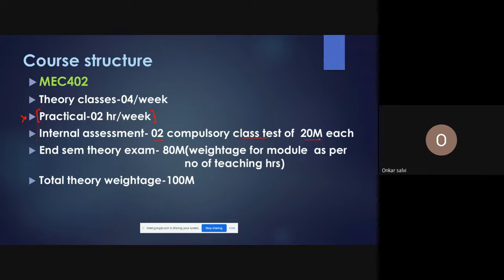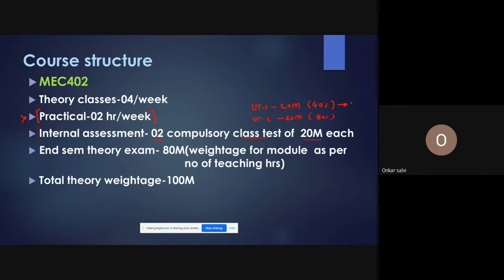Each unit test carries 20 marks. Unit Test 1 covers approximately 40% of the syllabus, and Unit Test 2 covers up to 80% of the syllabus. The passing mark is 40%, which means you need to score eight marks out of 20.